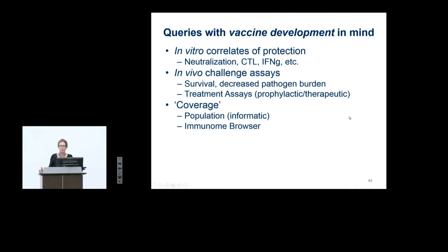For those familiar with those terms — in vitro correlates of protection include neutralizing activity, CTL activity, gamma interferon production, and also in vivo challenge assays, which demonstrate protection.